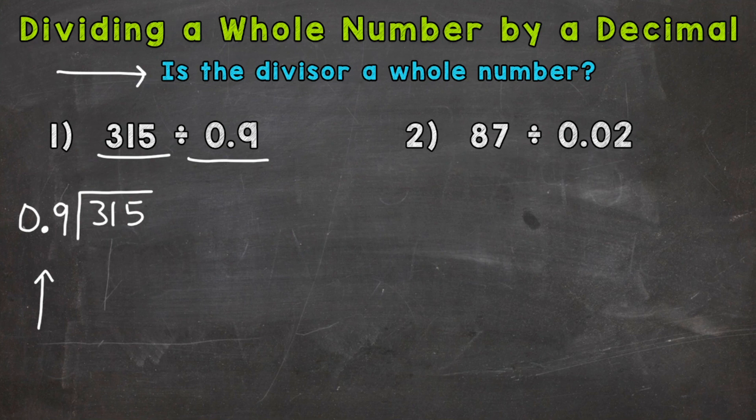And we do that by multiplying by a power of 10. And for this particular problem, we need to push that 9 one spot or one place value to the left so it's 9 ones or 9. And we can do that.